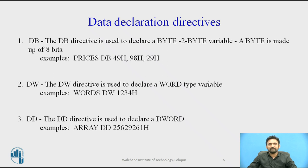The next is DD. The DD directive is used to declare a double word. A double word is made up of 32 bits, or 2 words, or 4 bytes. In the example, 'array DD' with value 25629261 will define a double word named 'array' and initialize it with the specific value when the program is loaded into memory to be run.